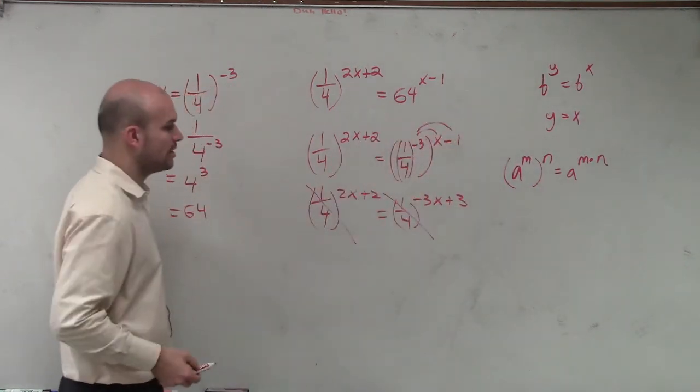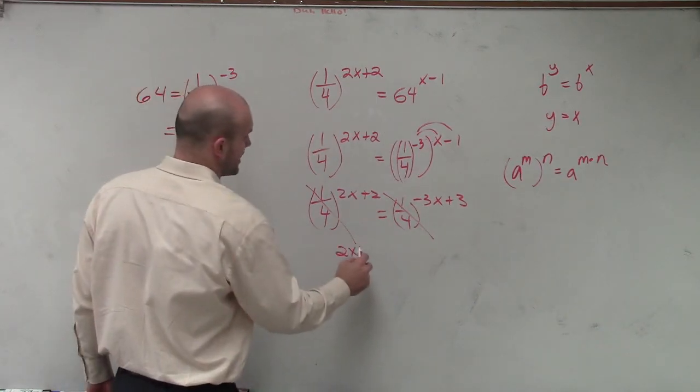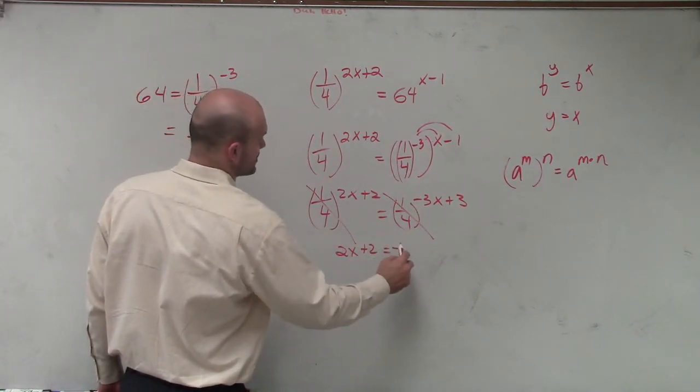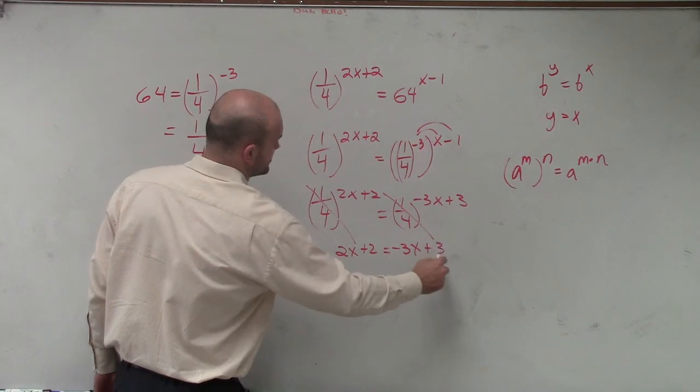Now I can apply my equality property, so therefore, I have 2x plus 2 equals negative 3x plus 3.